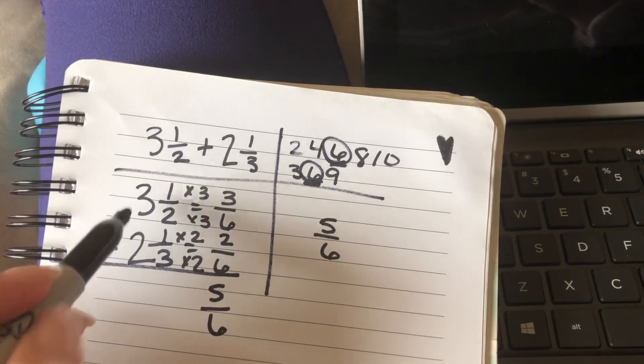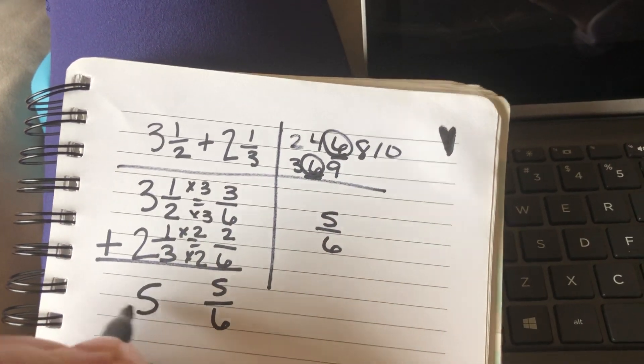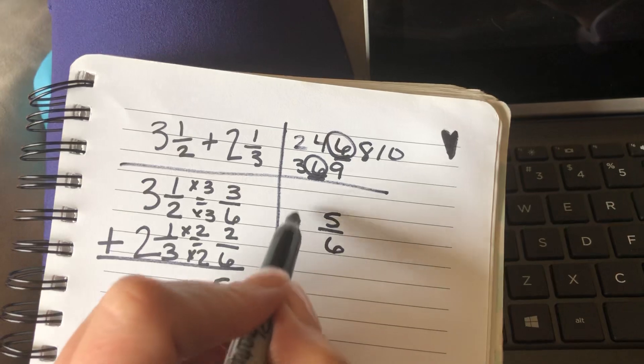Okay, now we can add our whole numbers. 3 plus 2 is 5. So I have 5 and 5/6.